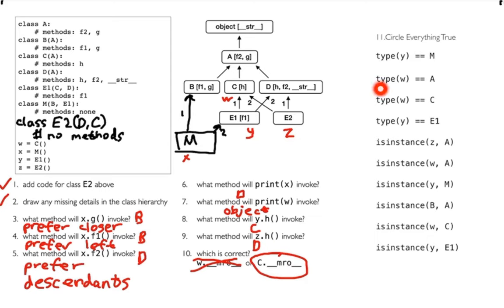I want to introduce a new method: isinstance. When I call isinstance, I take an object and a class. Basically, isinstance asks: is the object of type class, or some ancestor of class — ancestor could be parent, grandparent, whatever. isinstance is going to be a little more flexible than checking the type directly. Let's draw through some of these examples.